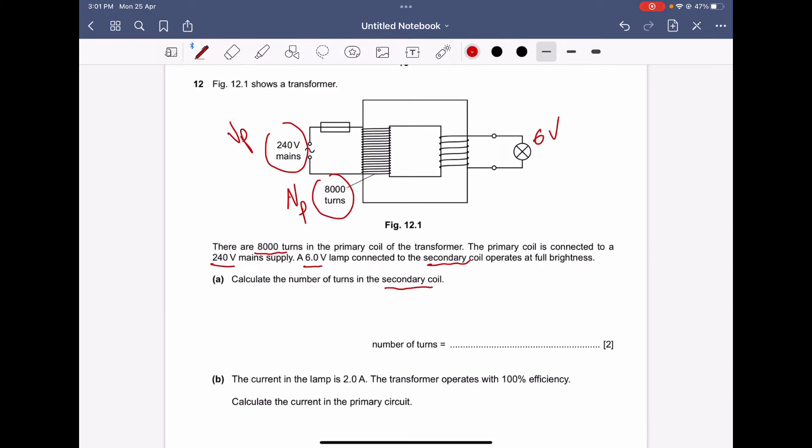There is a formula showing the relation between the primary coil and secondary coil and the primary voltage and secondary voltage. The formula is Np over Ns equals Vp over Vs.